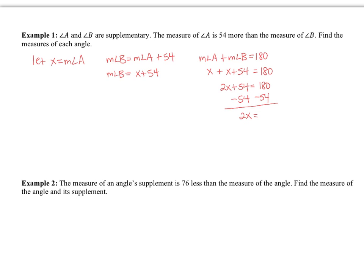So 2x is equal to 126, and we divide by 2, so x is equal to 63. Now we can find the measure of each angle. The measure of angle A equals the value of x, so the measure of angle A is 63 degrees. The measure of angle B equals x plus 54, and 63 plus 54 is 117, so the measure of angle B is 117 degrees.